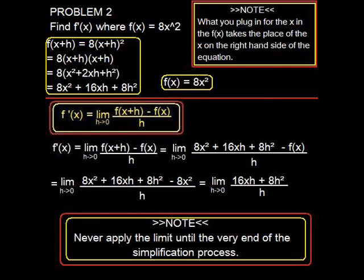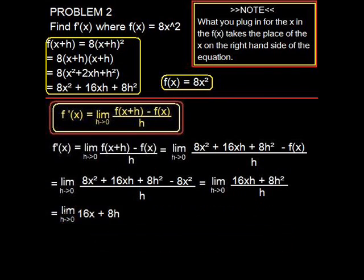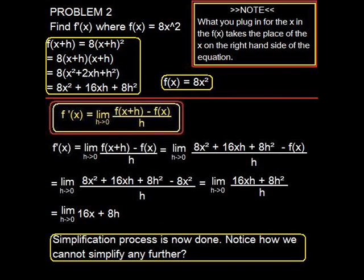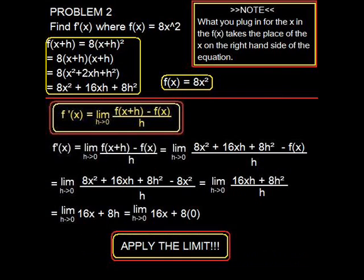We're going to be left with the limit as h approaches 0 of (16x + 8h). Since there's two h's applied to the 8, only one of them goes away, leaving us with the limit as h approaches 0 of (16x + 8h).